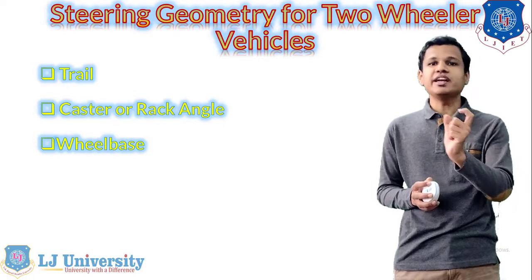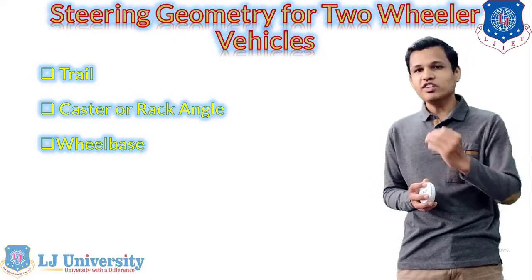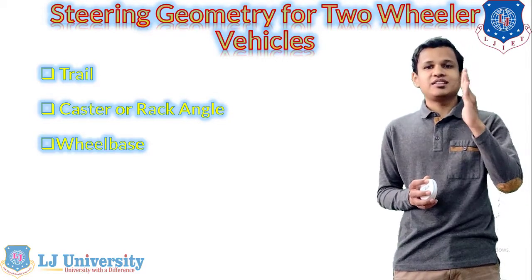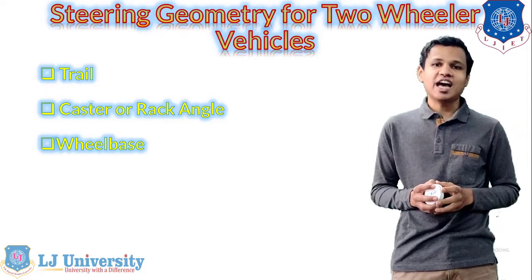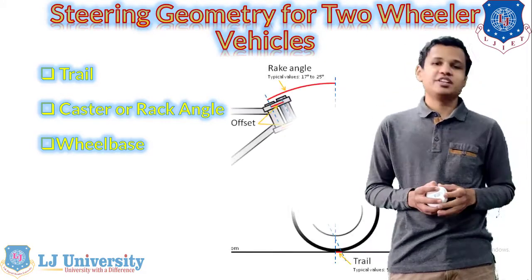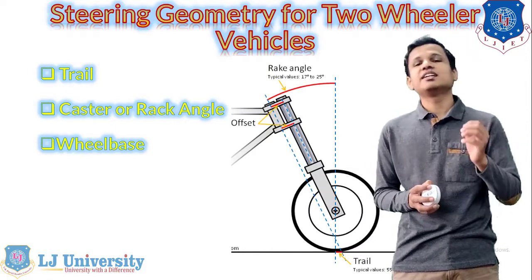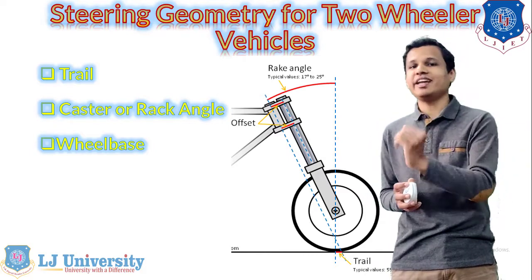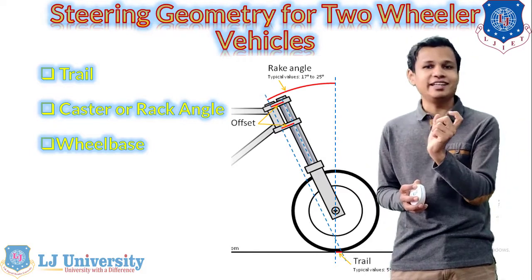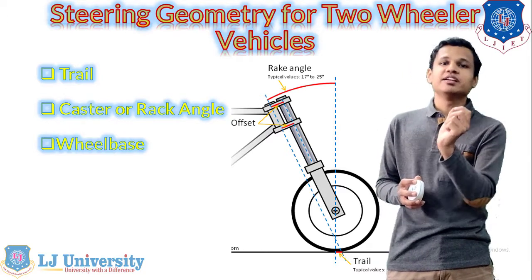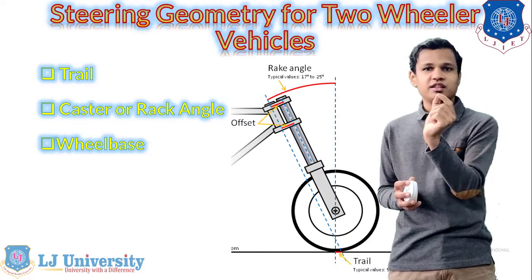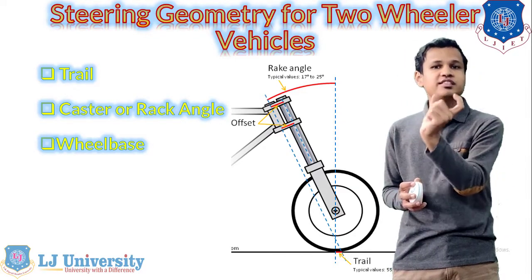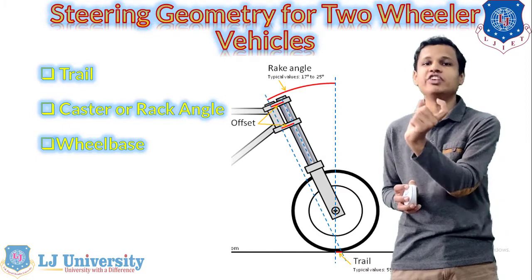The wheelbase will be the same as in four wheelers. The trail is similar to the scrub radius that we saw in four wheelers. The wheelbase is the distance between the two center lines of the front tire and the rear tire of the two wheelers. In the diagram you can see that the trail and the rack angle have been shown for the two wheelers. At the front side, the value of the trail is the distance between the two intersecting points — the steering axis and the road surface, and the center line and the road surface.